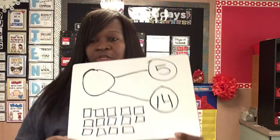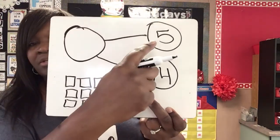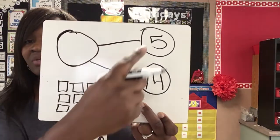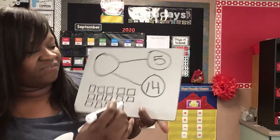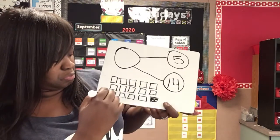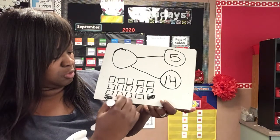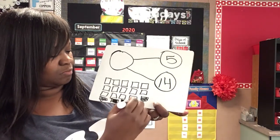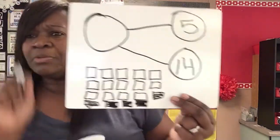So we have 14. And then we know the other part — the other part is five. So remember this number bond: you have your part, part, and a whole. So I'm going to add five. One, two, three, four, five. Oh my goodness, look at how messy that is. But it works.